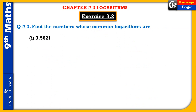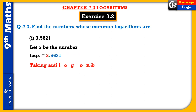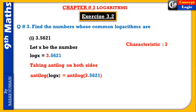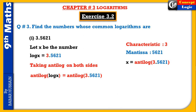Question number three: find the number whose common logarithm is given. Let x be the number — x کا log اس کے equal ہونا چاہیے۔ x find کرنے کے لیے taking anti-log on both sides — anti-log لیں گے دونوں طرف۔ Characteristic three ہے، mantissa point five six two one ہے۔ Anti-log اور log cancel ہو جائیں گے — x = anti-log of 3.5621۔